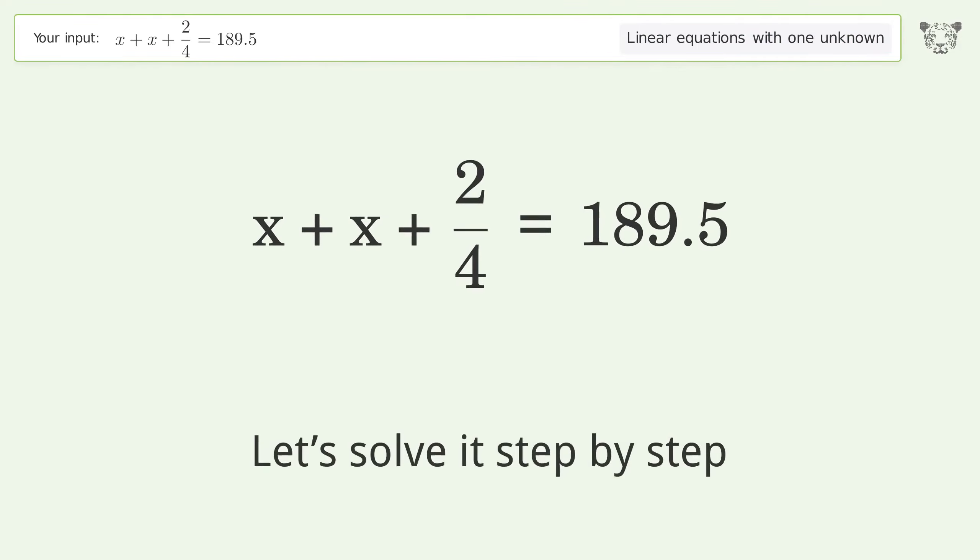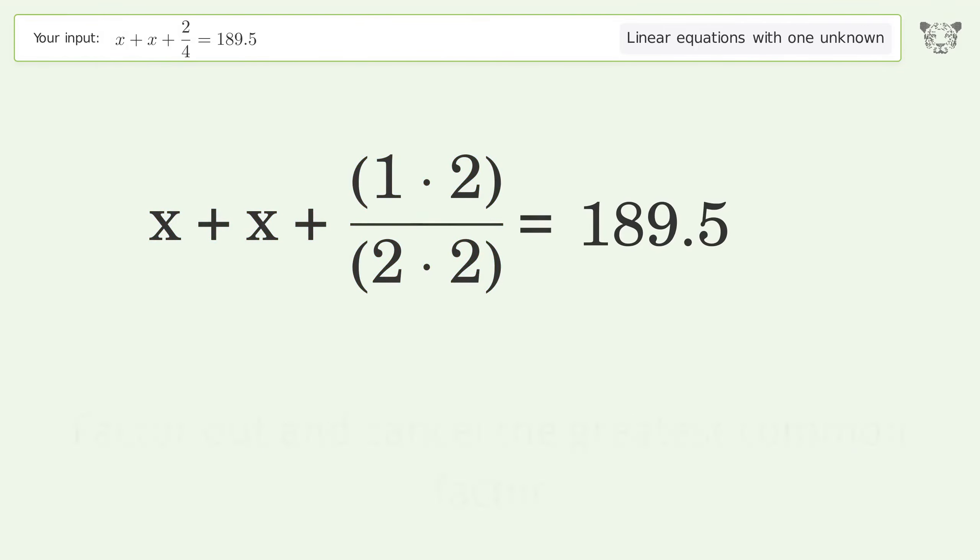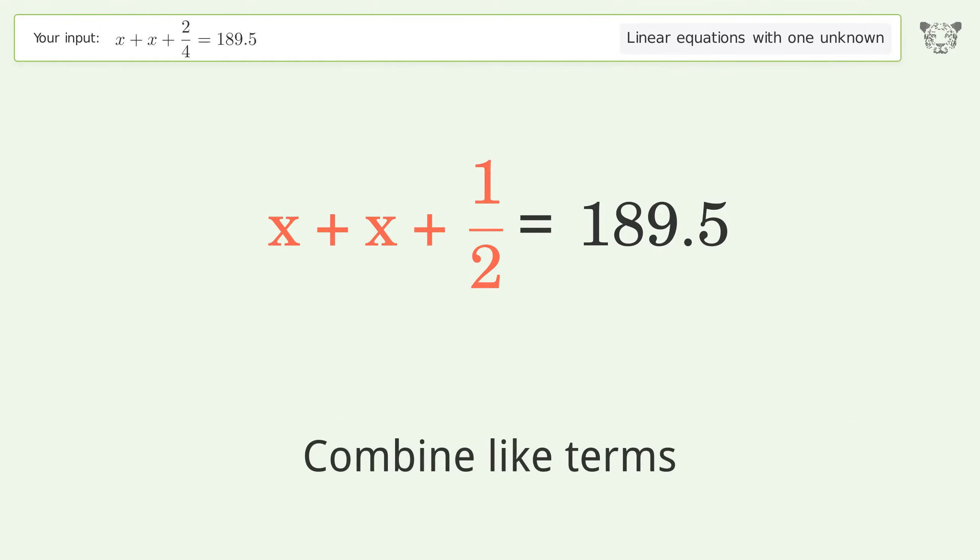Let's solve it step by step. Simplify the expression. Find the greatest common factor of the numerator and denominator, factor out and cancel the greatest common factor. Combine like terms.